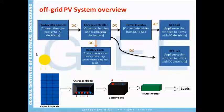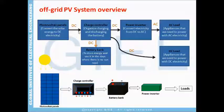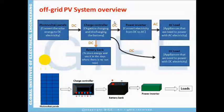As we can see, these are the photovoltaic panels. These photovoltaic panels convert the solar energy which comes from the sun to electricity. This electricity is DC electricity, or direct current. Now there is a charge controller — this charge controller will organize and regulate current flow between the photovoltaic panels into the battery bank.